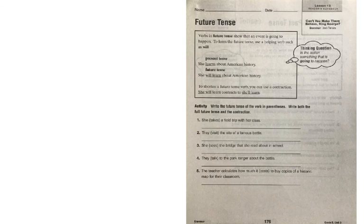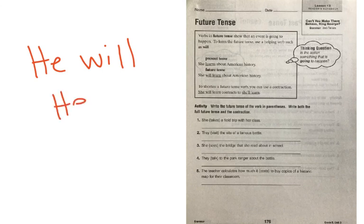You can shorten future tense verbs by using a contraction. If you had he will complete his homework after school, you're going to create the contraction he apostrophe LL—he'll. That's the contraction for he will.